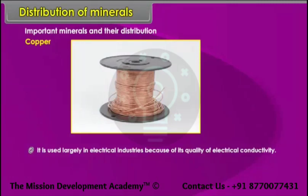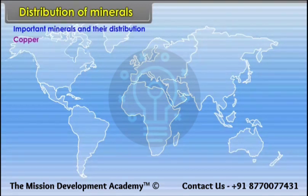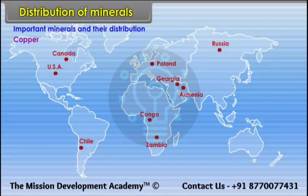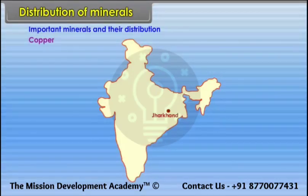Copper is used largely in electrical industries because of its quality of electrical conductivity. Location — World: Chile, USA, Canada, Poland, Russia, Georgia, Armenia, Congo and Zambia. In India: Jharkhand and Rajasthan.